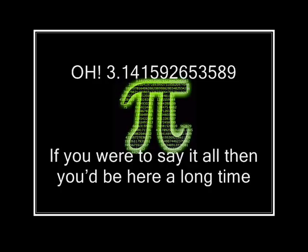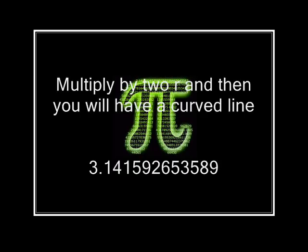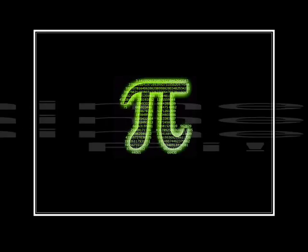3.141592653589. If you were to say it all then you'd be here a long time. Multiply by 2R and then you will have a curved line. 3.141592653589.